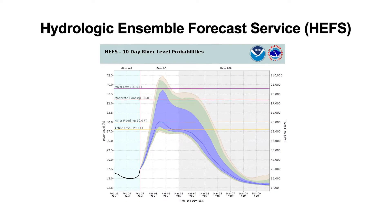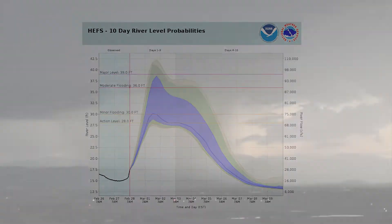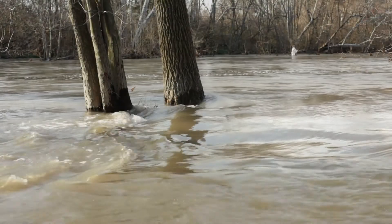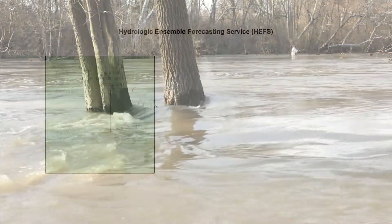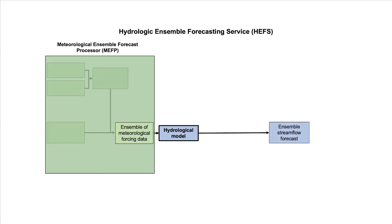The Hydrologic Ensemble Forecast Service, or HEFS, produces ensemble streamflow forecasts that account for both meteorological as well as hydrological uncertainty. HEFS uses the Meteorological Ensemble Forecast Processor, or MEFP, to produce an ensemble of meteorological forcing data for hydrological modeling. The hydrological model then produces an ensemble streamflow forecast that accounts for the meteorological uncertainty.